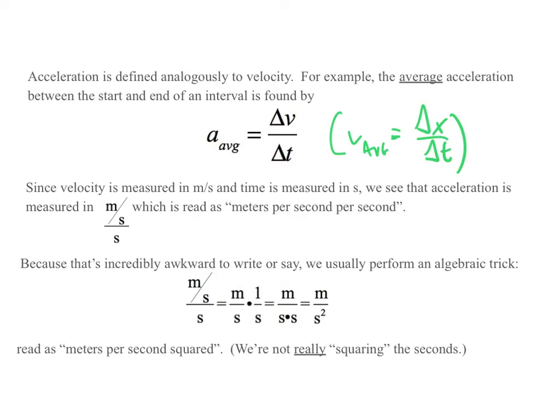We're not really squaring the seconds. It's just an algebraic trick, but it's a universal one. Don't let that make you lose sight of what's going on. If an acceleration is four meters per second squared, that means that every second the velocity increases by four meters per second. Or if the acceleration was minus nine meters per second squared, that means that the velocity is reduced by nine meters per second every second.